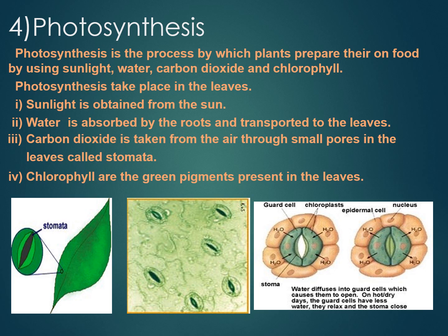Hope you all understand the process of photosynthesis. Now I want to discuss how plants get raw materials for photosynthesis, explained step by step. Starting with carbon dioxide: leaves get carbon dioxide from air through pores called stomata present on their surface. Each pore, called a stoma, is surrounded by two guard cells as seen in the picture. The guard cells control the opening and closing of stomata. When guard cells are open, carbon dioxide gas enters the leaves.